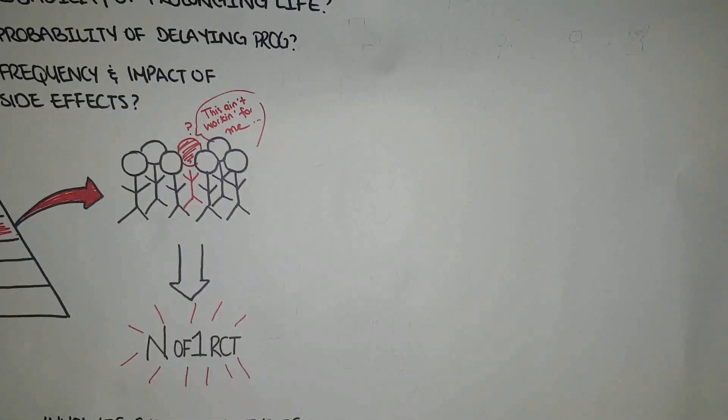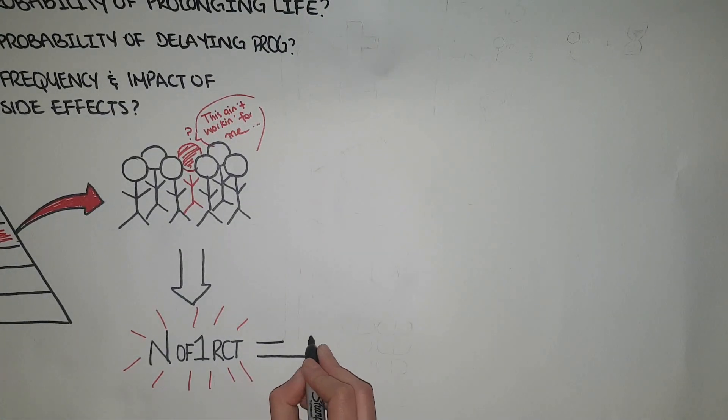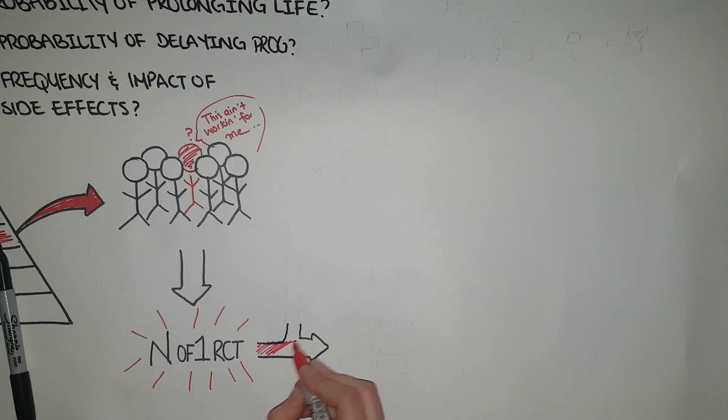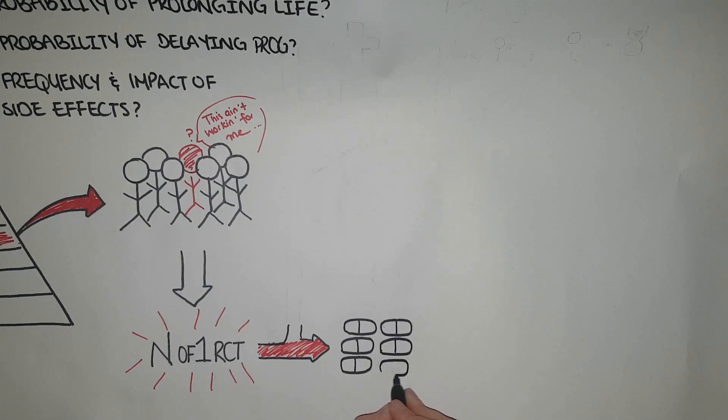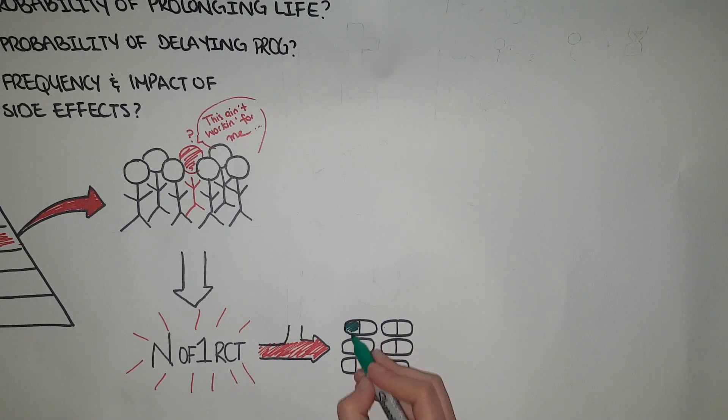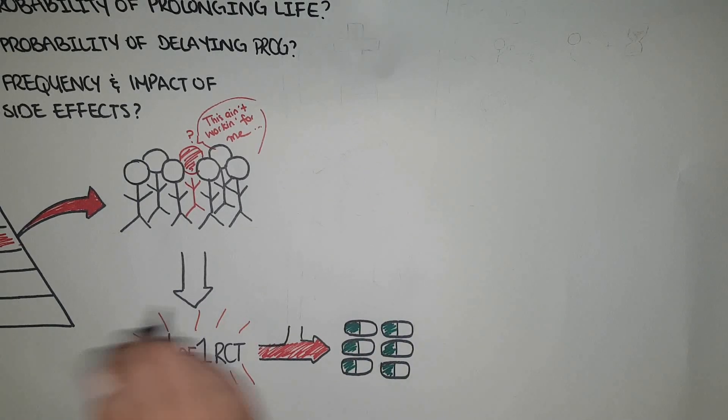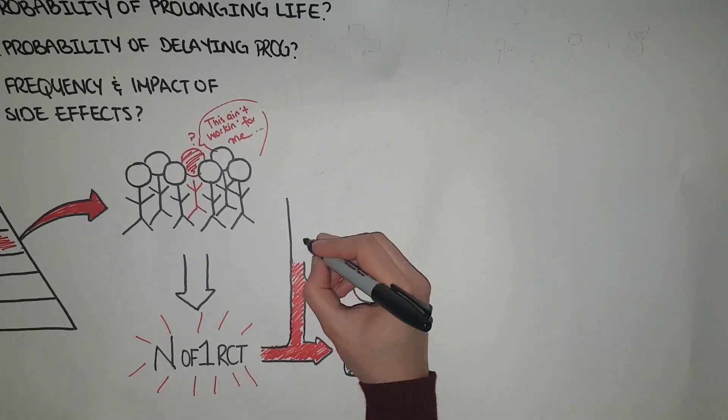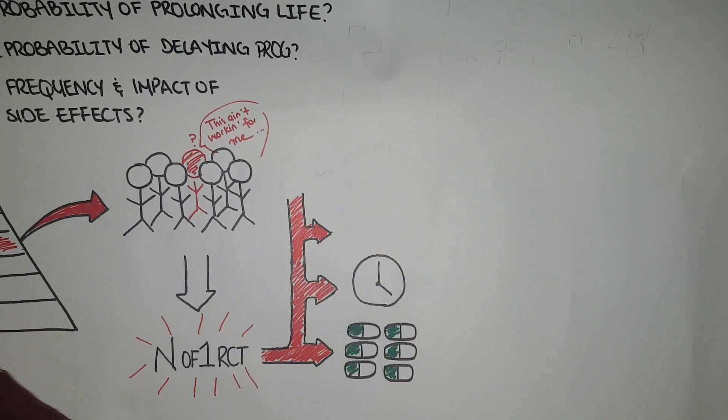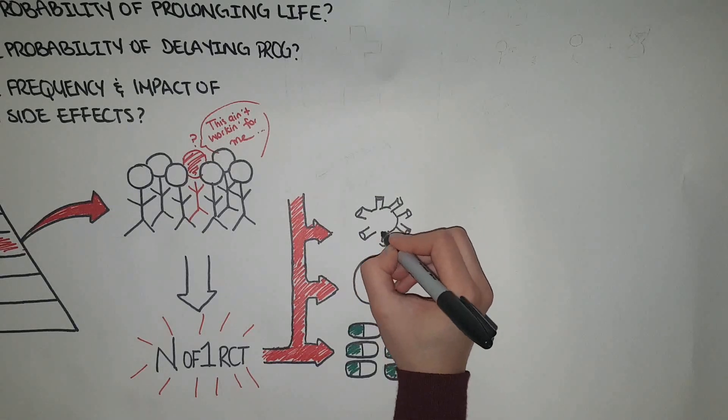Some criteria must be met so that an N-of-1 trial can be conducted. A minimum of three treatment pairs are needed as it is difficult to obtain a clear answer from a smaller number of pairs. The drug should have a rapid onset of action and rapid termination of action. The disease should be chronic or stable.